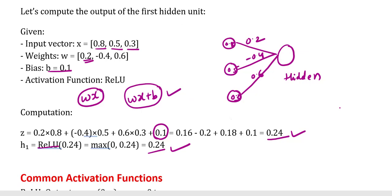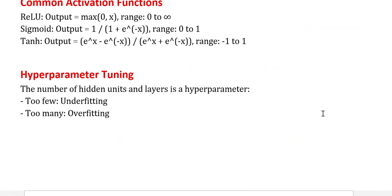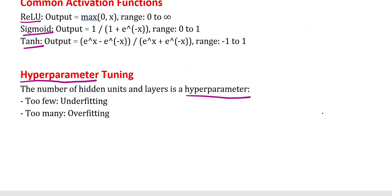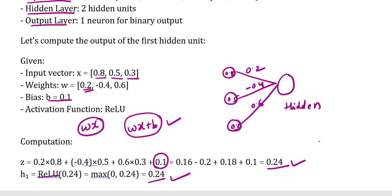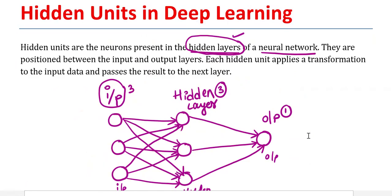In addition to ReLU, we have different activation functions: ReLU, sigmoid, and tanh. We also have the concept of hyperparameter tuning — the number of hidden units and layers is a hyperparameter. When there are too few hidden units we get underfitting; when there are too many we get overfitting. This concludes the concept of hidden units in deep learning. Thank you for watching, please subscribe to my channel.